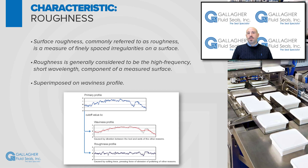In the image shown below, the primary profile consists of two profiles together — the red waviness profile and the dark blue roughness profile superimposed on top of it.